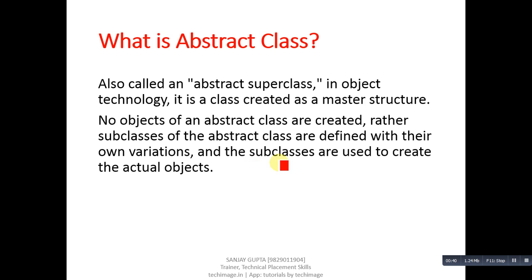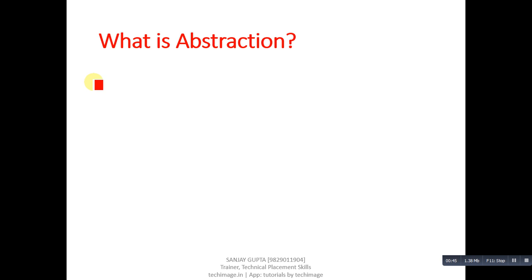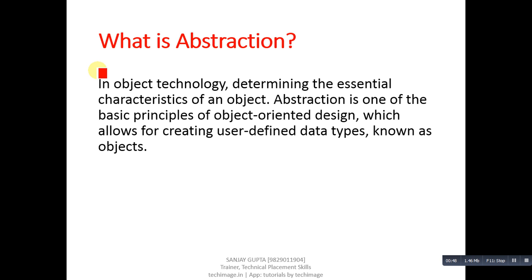Next question: what is abstraction? Answer: in object terminology, abstraction means determining the essential characteristics of an object. Abstraction is one of the basic principles of object-oriented design, which allows for creating user-defined data types known as objects.